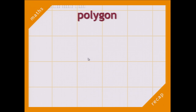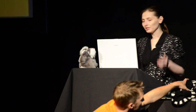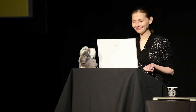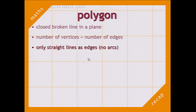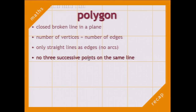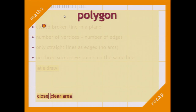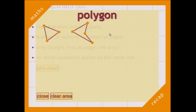First of all, we're not going to get directly into it. We're going to start with a short recap of 2D geometry, and first of all, what a polygon is. Well, it's a closed broken line in the plane. The number of vertices equals the number of edges. There are only straight lines as edges — no arcs, nothing curvy. And there are no three successive points on the same line. But this is just words — it's better to draw. So we can have something simple like a simple convex polygon, and then also something like a concave polygon, or something like a self-intersecting polygon.